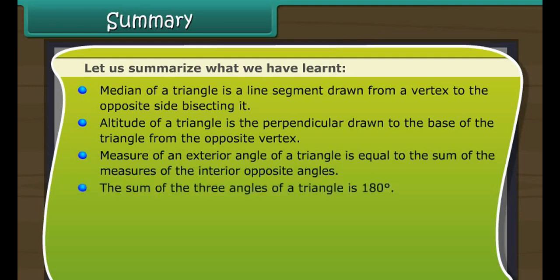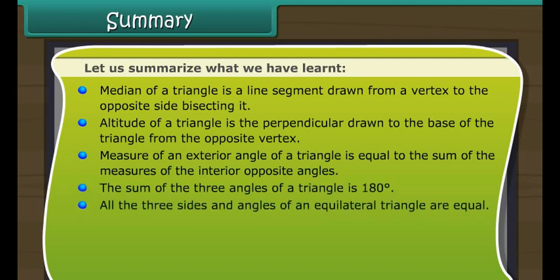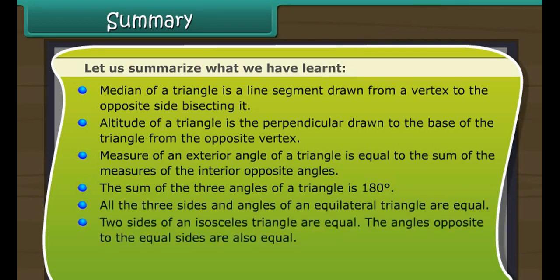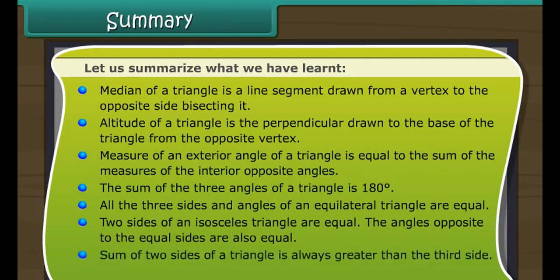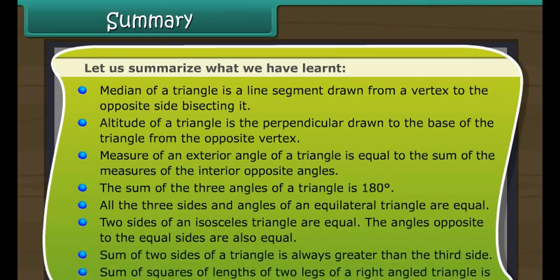The sum of the three angles of a triangle is 180 degrees. All three sides and angles of an equilateral triangle are equal. Two sides of an isosceles triangle are equal, and the angles opposite to the equal sides are also equal. The sum of two sides of a triangle is always greater than the third side. The sum of squares of lengths of the two legs of a right-angled triangle equals the square of the length of its hypotenuse.